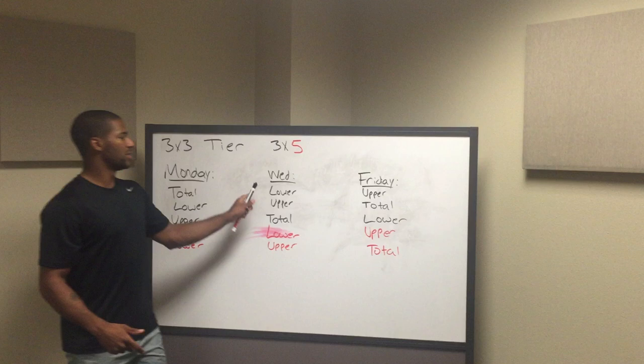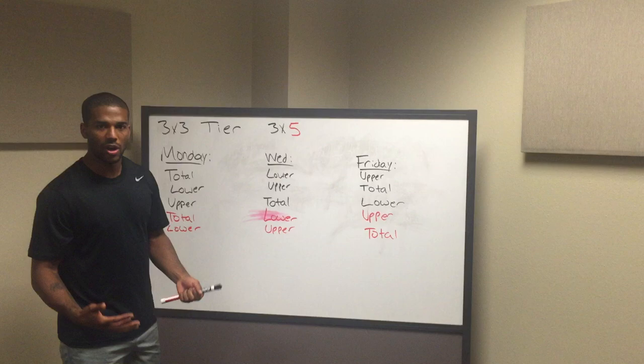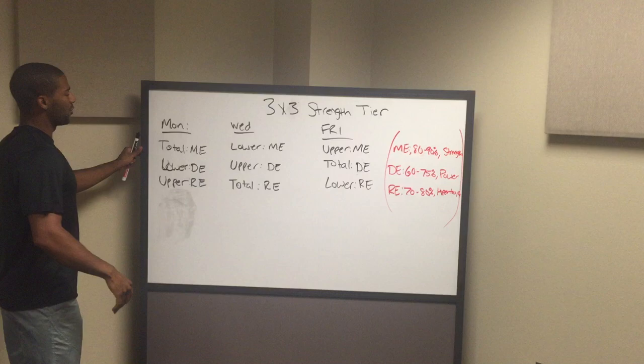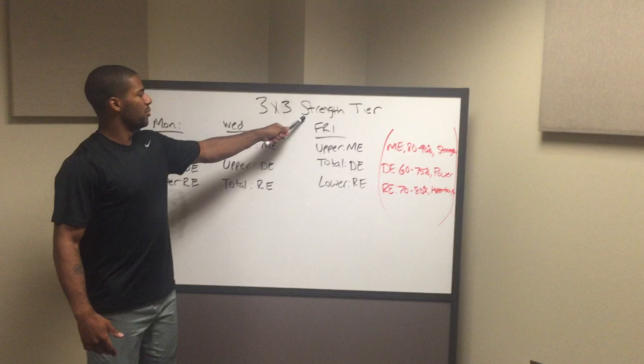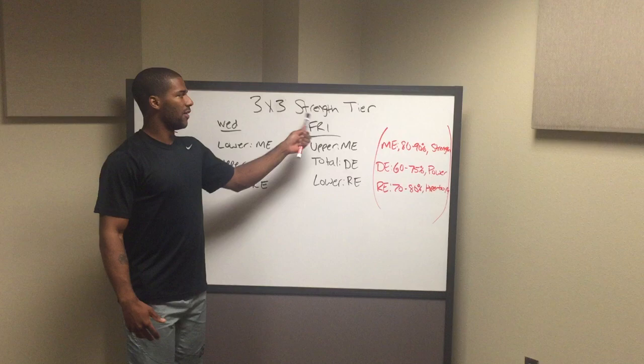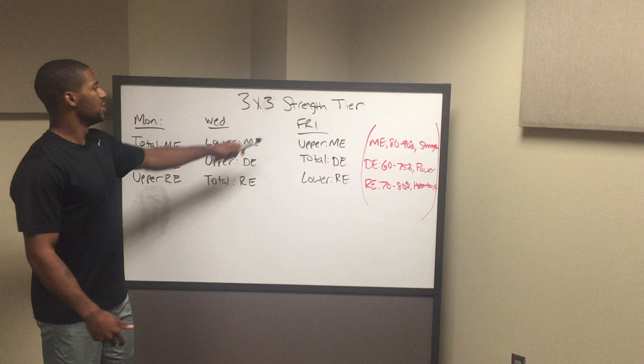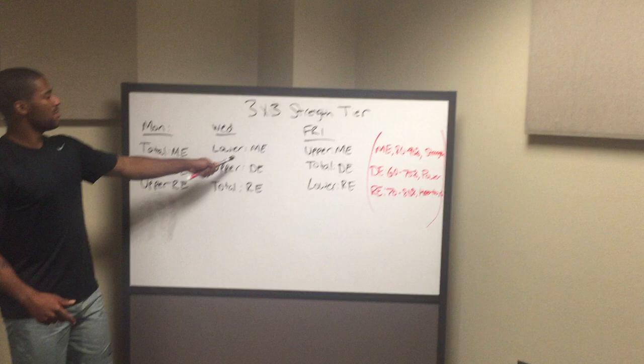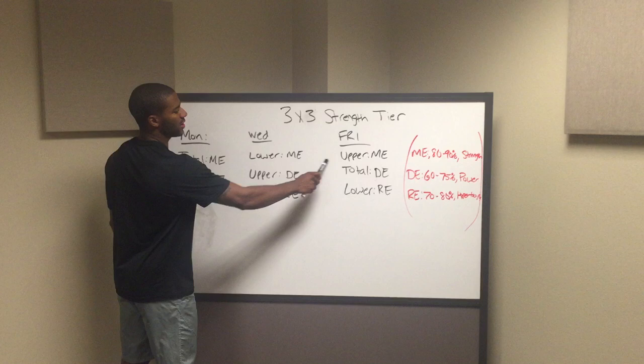Here we have a simple three-by-three strength tier. You can break these tiers into different types of movements — this is really good for athletes, so you can break it up to a football tier, a basketball tier, whatever you want. For strength, on Monday we'll do total at max effort, lower at dynamic effort, and upper will be a repeat effort. Wednesday: lower, max effort. Friday: upper, max effort. The max effort stays as the first movement of the day, dynamic effort is the second movement, and repeat effort is the third movement.